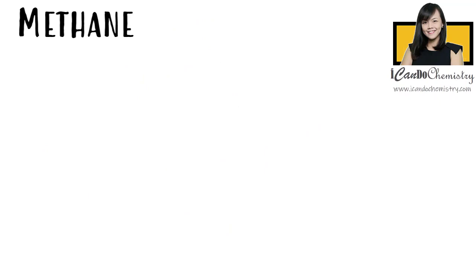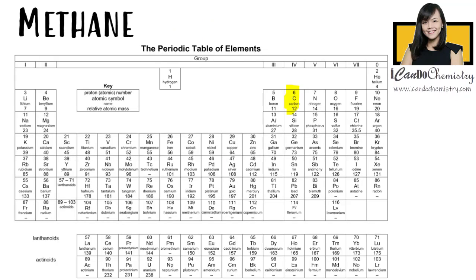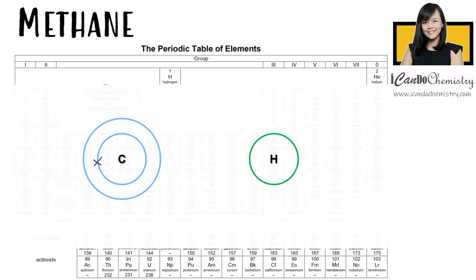Let's start with methane, which has one carbon and four hydrogens. This is carbon in the periodic table. It has six electrons and it would use four outermost electrons for bonding to achieve stable noble gas octet electronic configuration.